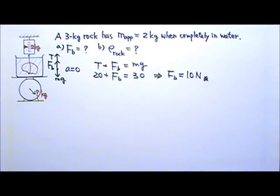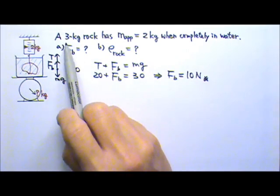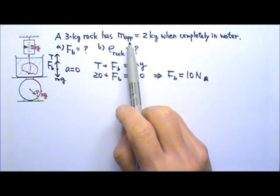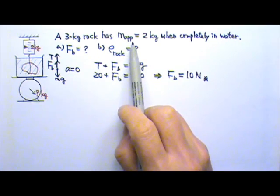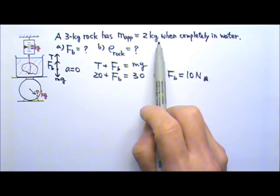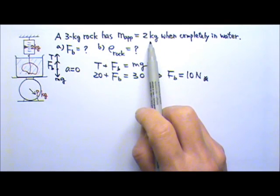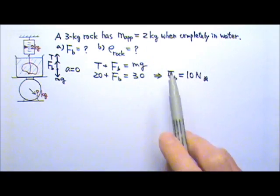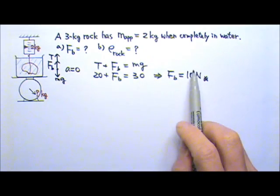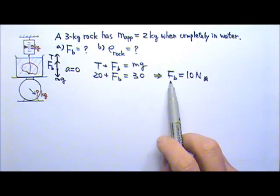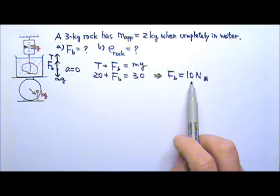So that's the answer for part A. Another way to look at this is that the 3 kg rock seems lighter when it's completely submerged in water. It seems 1 kg lighter: 3 minus 2 equals 1. 1 kg lighter, and that is caused by the buoyant force. 1 kg lighter means 10 N lighter, so buoyant force must equal to the 10 N.